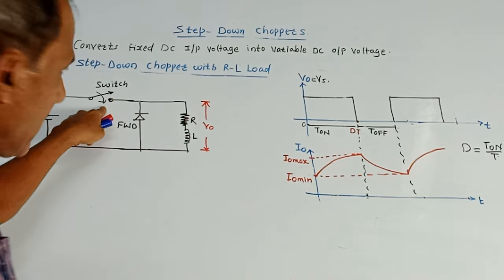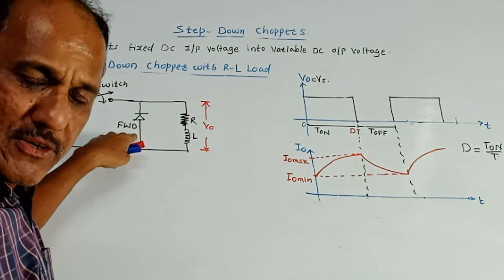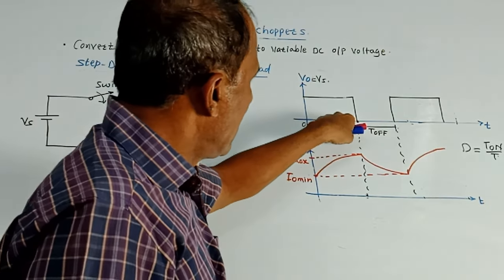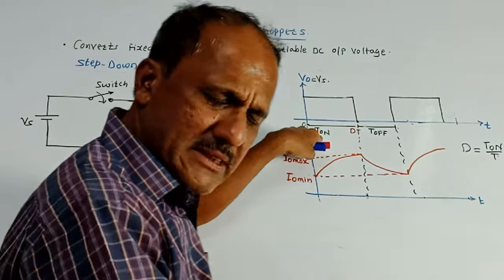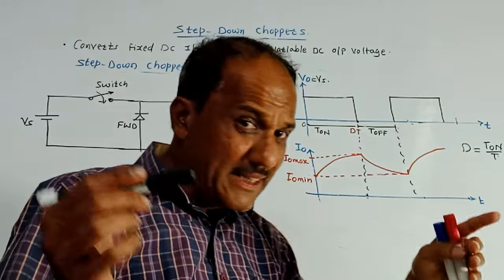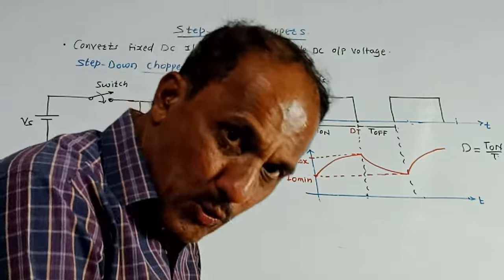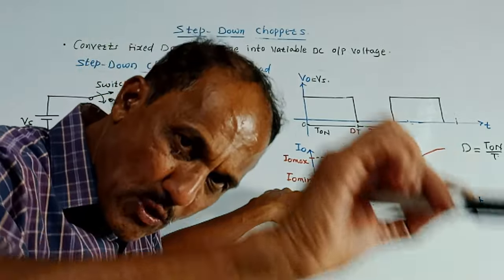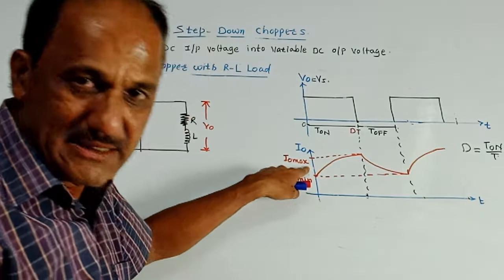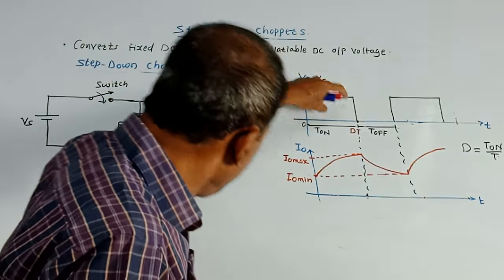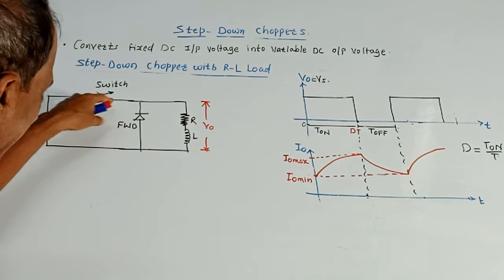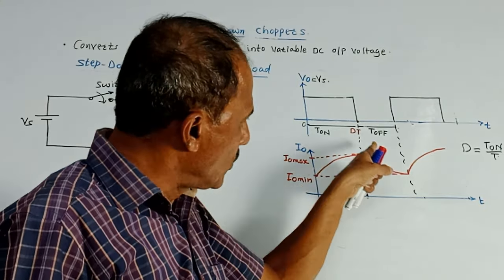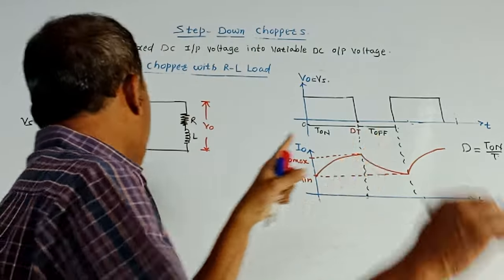Now, Vs is the voltage, DC voltage applied at the input. Whenever the switch is closed, then you are getting ON pulse like this. Whenever switch is closed, this FWD, freewheeling diode will be reverse biased and entire Vs will appear across the output. So you are getting the Vs at the output. This particular time period is T ON, very much similar to the earlier case. But this is inductor action. So as far as the output current is concerned, the output current increases exponentially like this from some minimum value that is I0 minimum to some maximum value that is I0 maximum. This is the effect of inductor. So during T ON, FWD reverse bias, this Vs is directly available at the output.